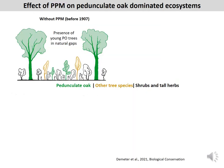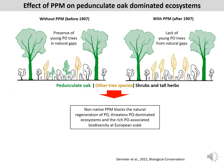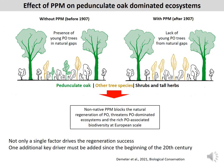What we want to emphasize is that before the introduction of mildew, Pedunculate oak could regenerate naturally in its natural gaps. After the introduction, it was impeded by the mildew, which has serious nature conservation consequences. We do not claim that only a single factor drives regeneration failure — high game pressure and drought periods can themselves kill natural regeneration — but we should put more emphasis on PPM, the powdery mildew, which has been an additional key driver from the beginning of the 20th century.